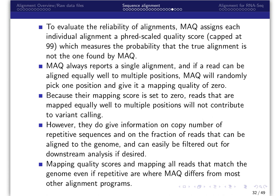Because their mapping score is set to zero, reads that are mapped equally well to multiple positions will not contribute to variant calling. However, they do give information on copy number and repetitive sequences, and on the fraction of reads that can be aligned to the genome, and can easily be filtered out for downstream analysis if desired. Mapping quality scores and mapping all reads that match the genome, even if repetitive, are where MAC differs from most other alignment programs.